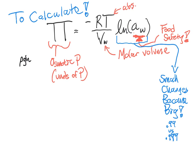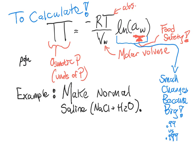Yay. So here you go. Your task, make normal saline, which I'll explain what that is in just a second. And the osmotic pressure of human red blood cells is 0.83 megapascals.